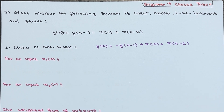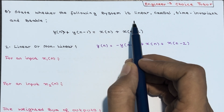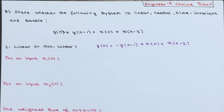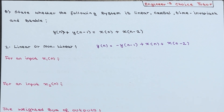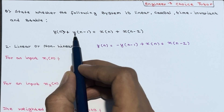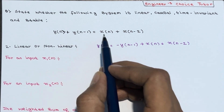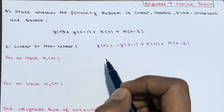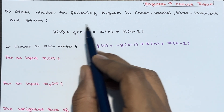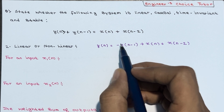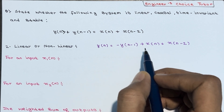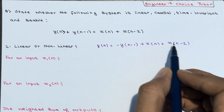Hey everyone, in this lecture we will see one more numerical. The question will come like: state whether the following system is linear, causal, time invariant, and stable or not. The system difference equation is given as y(n) + y(n-1) = x(n) + x(n-2). Bringing the y(n-1) term to the right side, y(n) = -y(n-1) + x(n) + x(n-2).